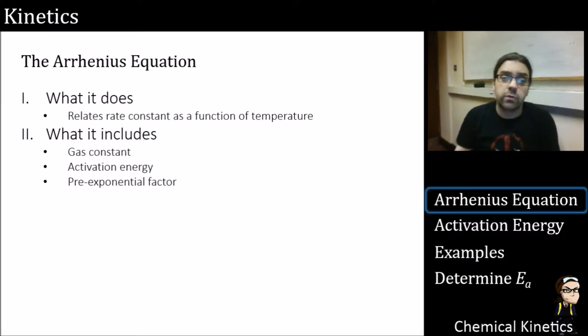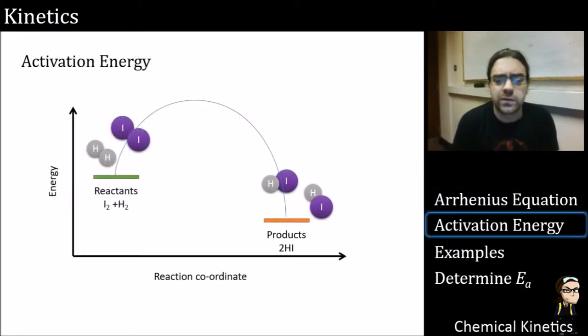Let's recap the Arrhenius equation. What does it do? It relates the rate constant K as a function of temperature. It's very straightforward. It includes the gas constant as a constant from physics and physical chemistry. It includes the activation energy, which we're going to cover soon. And it has a pre-exponential factor, which is effectively the subject of this entire section of the lecture course. So let's move on to activation energy.